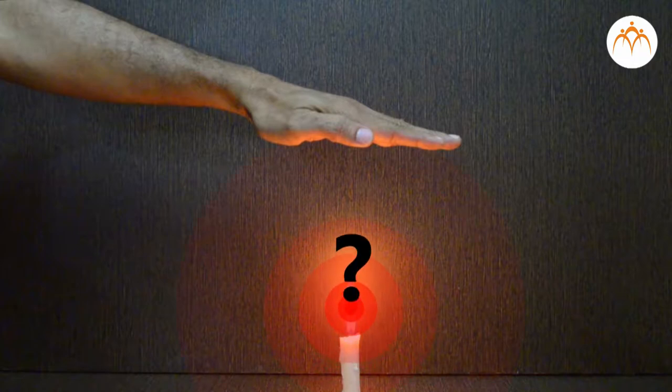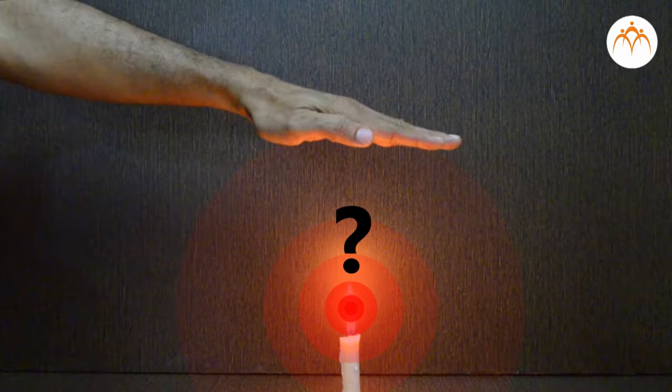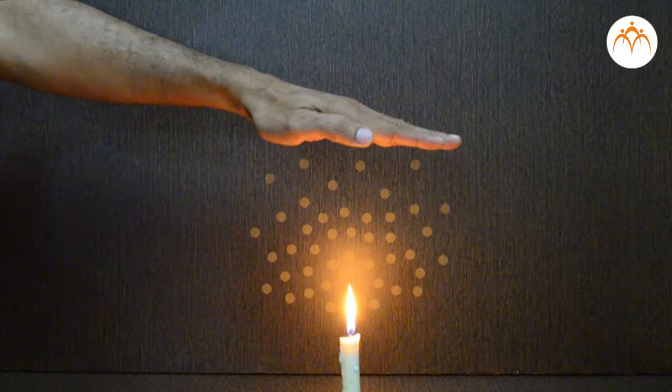How it reaches my hand? Air in contact with flame gets heated and it becomes lighter. Lighter air travels upwards and comes in contact with my hand.